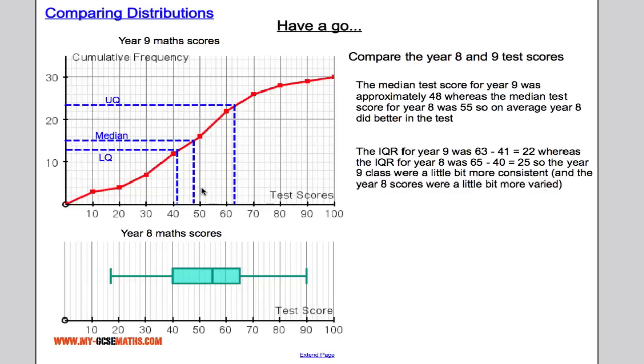As I said before, you could be asked to compare different representations of data. So you could have a stem and leaf diagram. You could have a histogram. So just be prepared to comment on medians and range or more preferably interquartile range to get your marks.